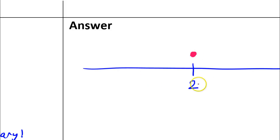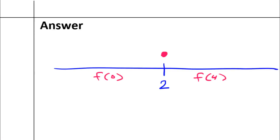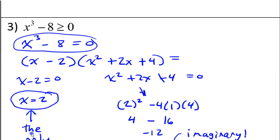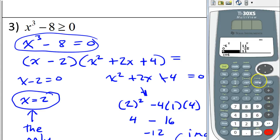Now, I need test values in each zone, meaning to the left and to the right. To the left of two, I could use zero, for example. To the right of two, I could use three or four or five. I'm going to use four. So, these will be my two test values. Let's see the value of the function at these values to see if they are greater than or equal to zero. So, I'm going to put the function in my calculator.